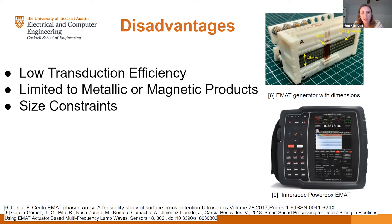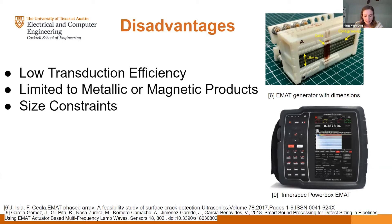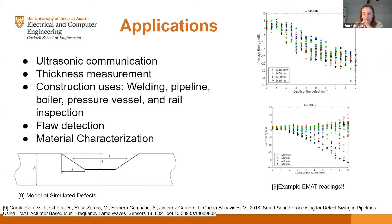EMATs are also limited to metallic or magnetic products. Using these non-destructive techniques on ceramics or plastics just doesn't work, or if it does the signal is so weak it's not worth using — you really should be using a piezoelectric in those cases. The last notable limitation is size: EMATs are much bigger than piezoelectrics. Small-scale EMATs are being worked on, but a lot of what makes EMATs great is lost when you make them really small, so that's definitely an area that needs improvement.